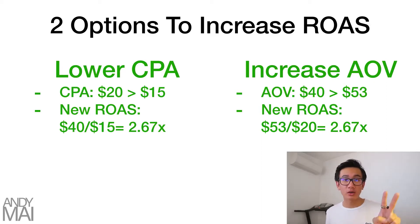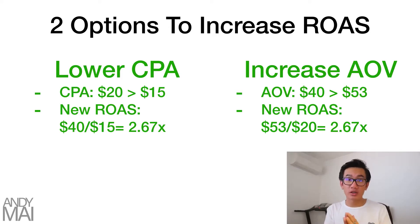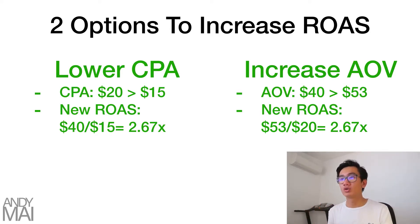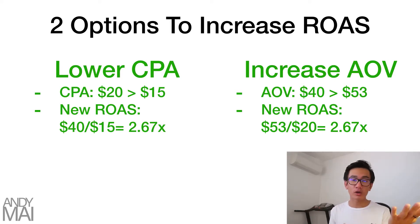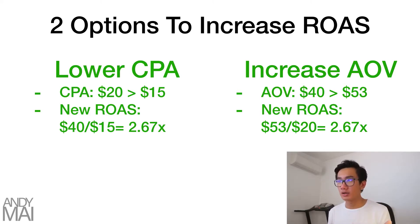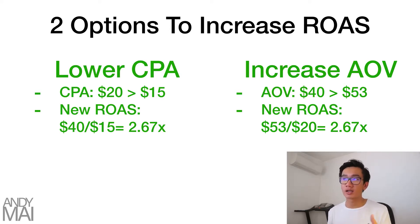You have two options when it comes to increasing your ROAS. One is lowering your CPA — you could decrease it from $20 down to $15, and your new ROAS would be $40 (your average order value) divided by $15, which leads to a ROAS of 2.67x. Or you could increase your AOV from $40 up to $53, and your new ROAS would be $53 on a $20 CPA — which also leads to a 2.67x ROAS.